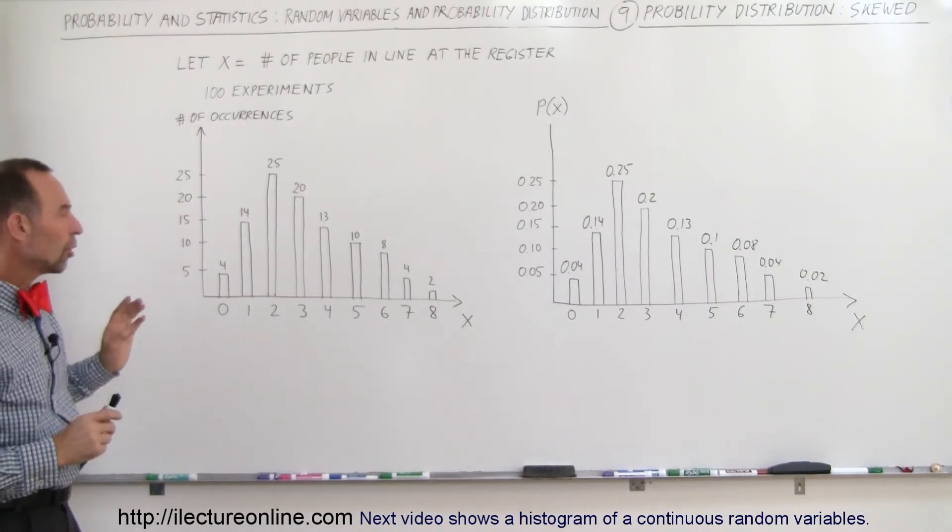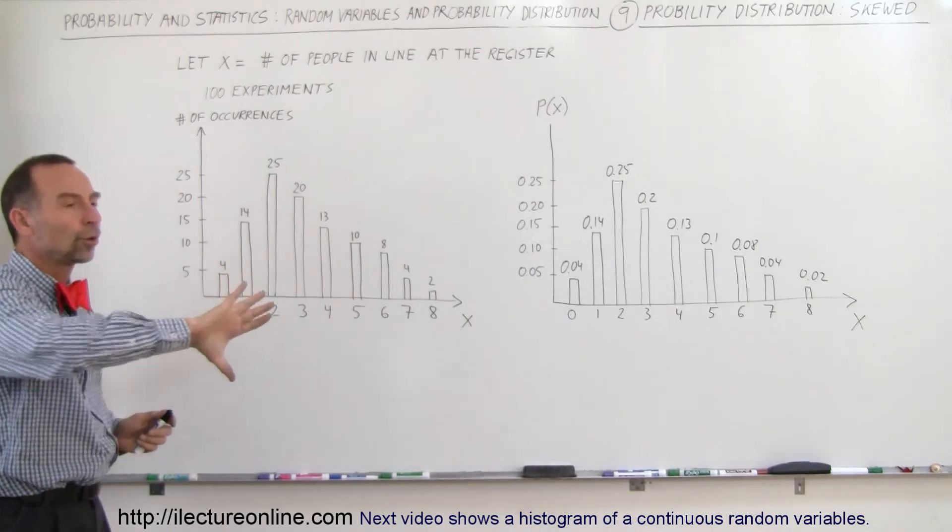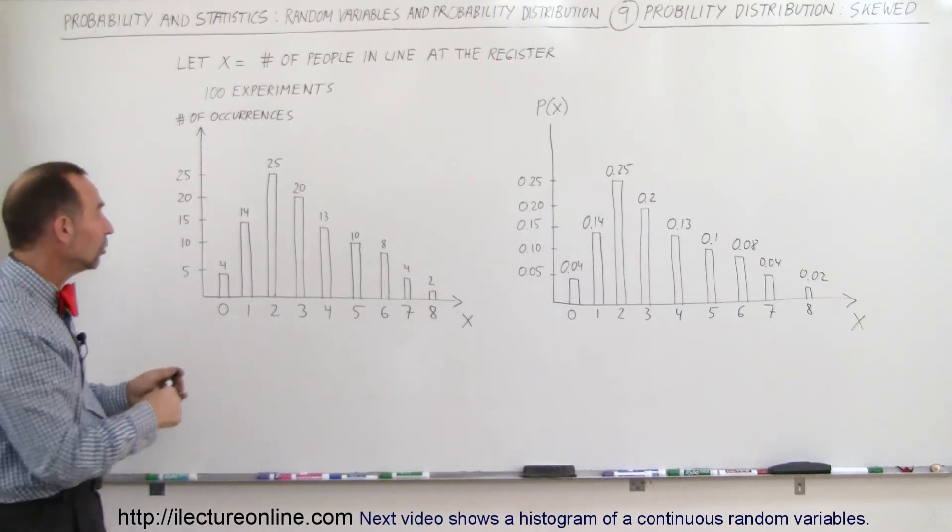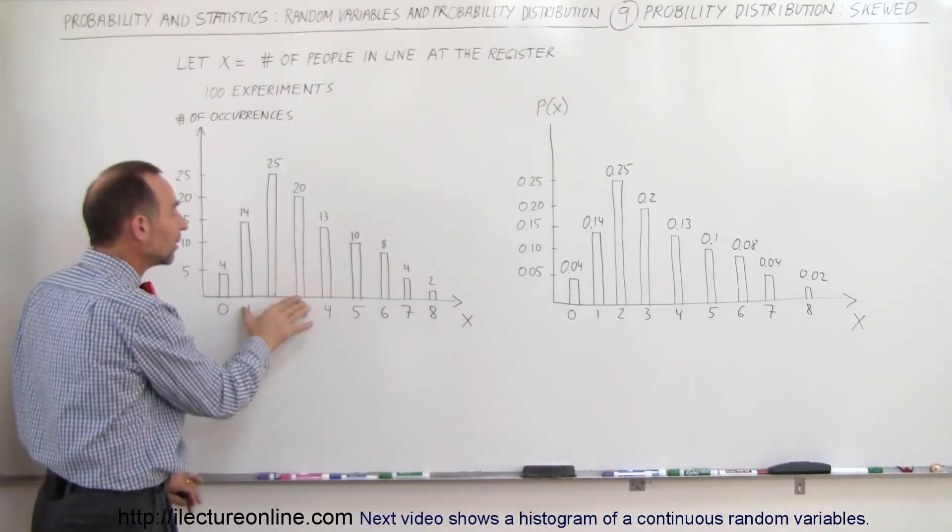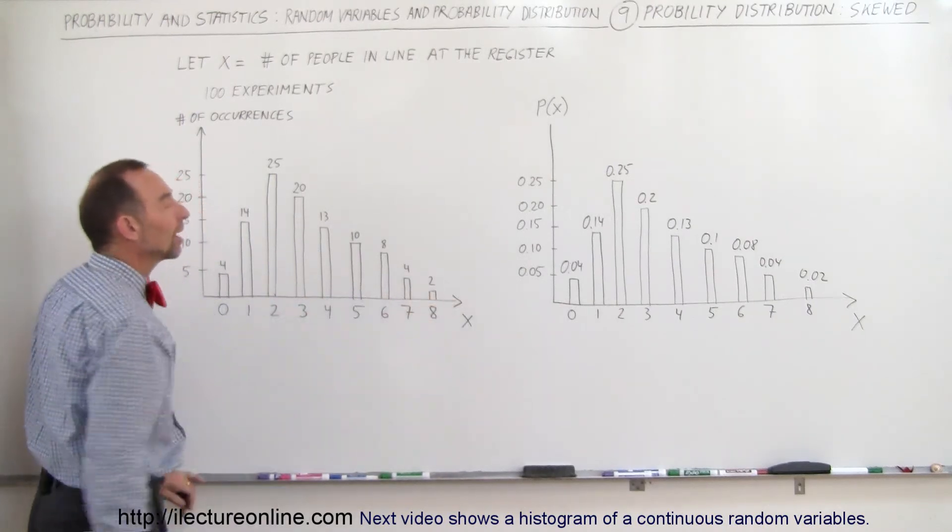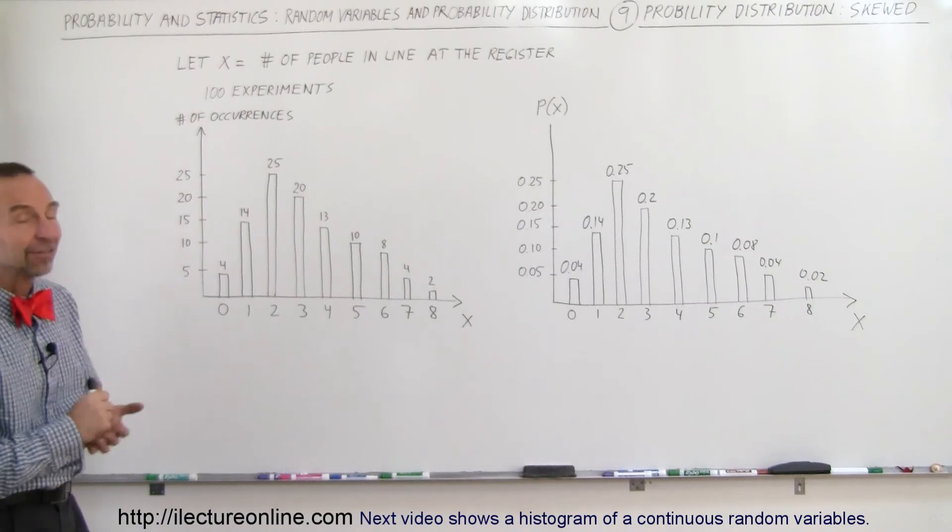Just to show you, though, that this is what we call a skewed graph where the center is pushed either to one side or to the other side. So the likelihood of one, two, or three people being in line is much greater than the likelihood of more than three people standing in line, and that's what we can get out of looking at a graph like this, and that's how we do that.